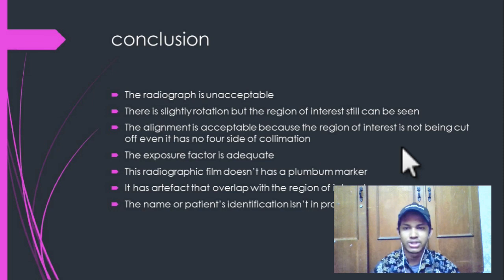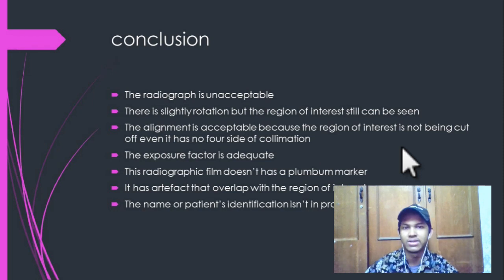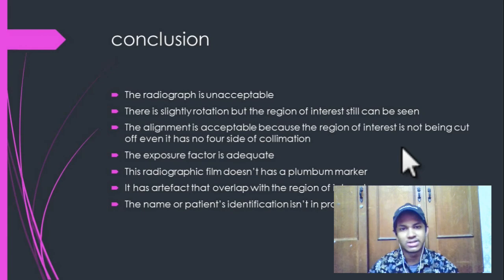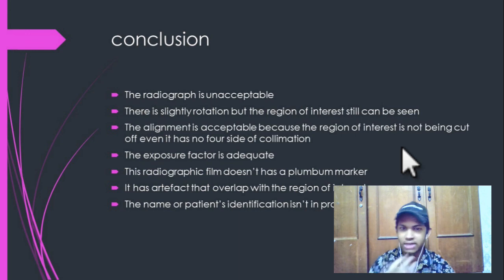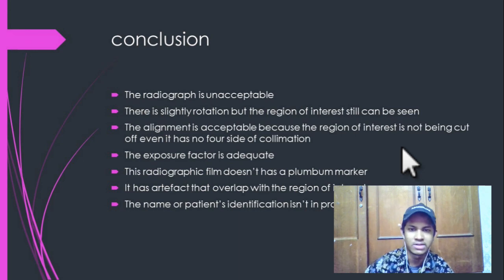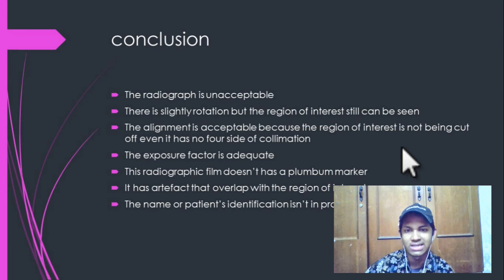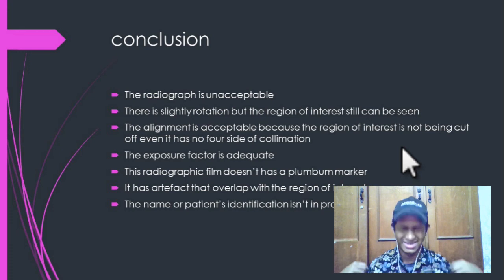In conclusion, the radiograph is unacceptable. There is slight rotation, but the region of interest can still be seen. The collimation is acceptable because the region of interest is not being cut off, even though there are no four sides of collimation. The exposure factor is adequate, but the radiographic film does not have a lead marker and has artifacts. The patient's identification is not present, therefore we cannot accept this image.